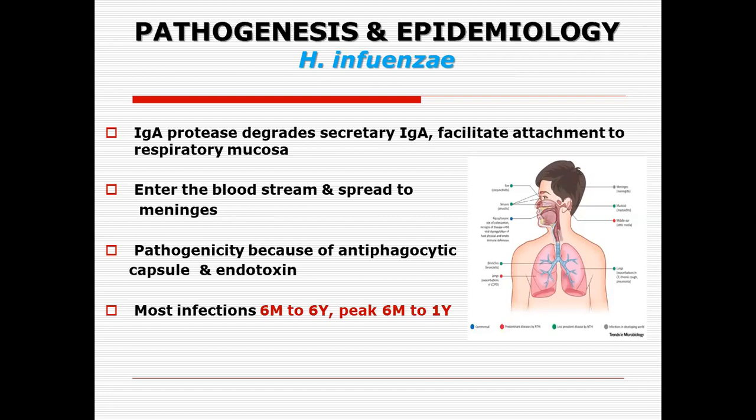The pathogenicity of this organism is mainly contributed by the antiphagocytic capsule and endotoxin. The mode of endotoxin produced has not yet been fully identified, but mostly it is the antiphagocytic action of this organism that contributes to bloodstream infections. The most affected age group is 6 months to 6 years of age, with peak incidence from 6 months to 1 year — this is the time when babies' immune systems are not fully functional, being dependent on maternal antibodies which last a maximum of one year, after which the opportunity arises for this organism to cause disease in infants.